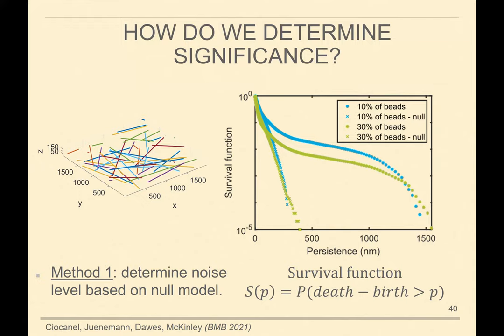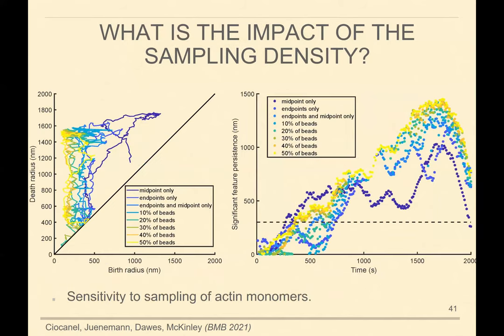This is something we're still exploring — we find it an interesting question that hasn't been explored as much. Finally, I wanted to say something about the sampling density we use. We wanted to see how extracting more or fewer points from actin filaments changes the results, looking at these paths in persistence diagram space.